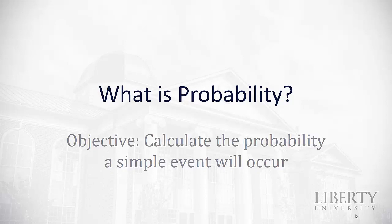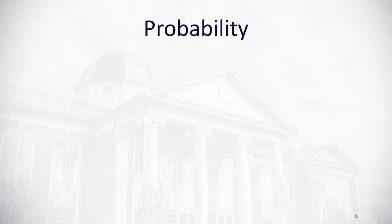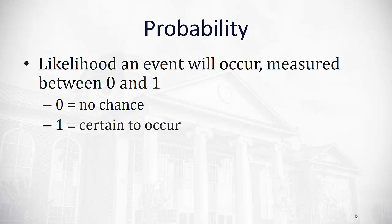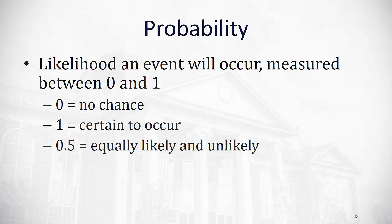The foundation to statistics and statistical analysis is truly found in probability. Today we're going to take a look at calculating the probability that a simple event will occur. Probability is simply a measurement between 0 and 1 that describes the likelihood an event will occur. We use 0 to represent no chance and 1 to represent an event that is certain to occur, and decimals in between to show various levels of probability.